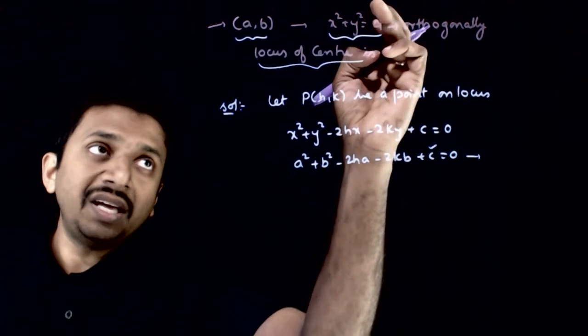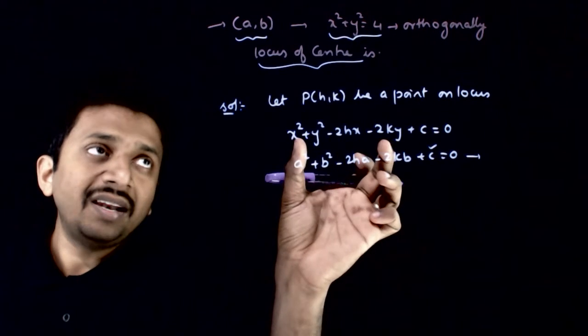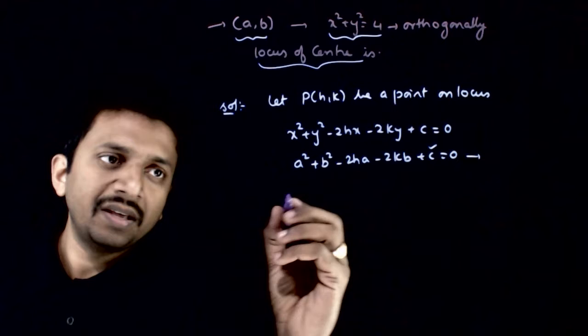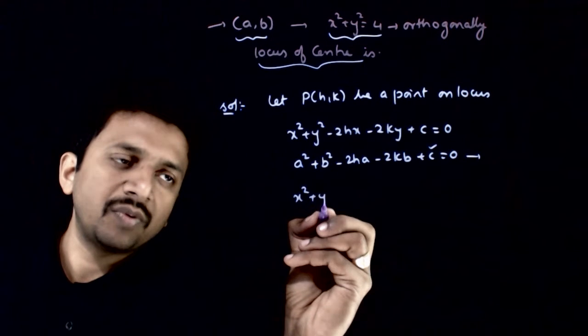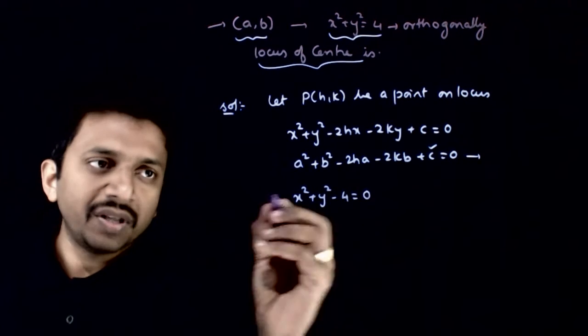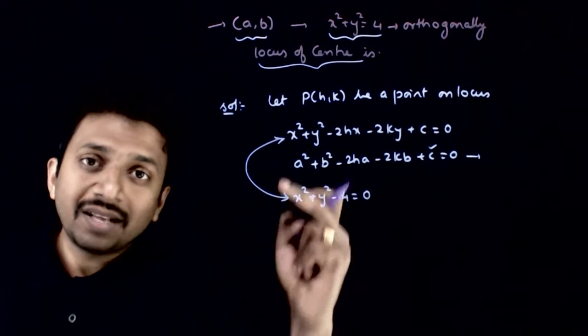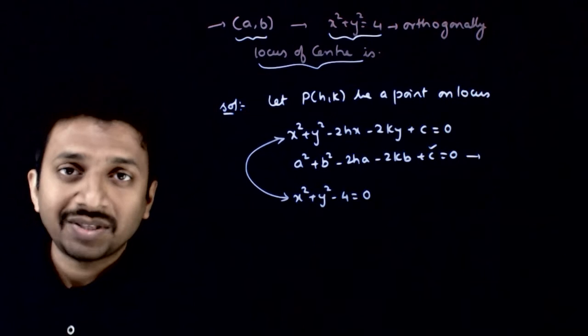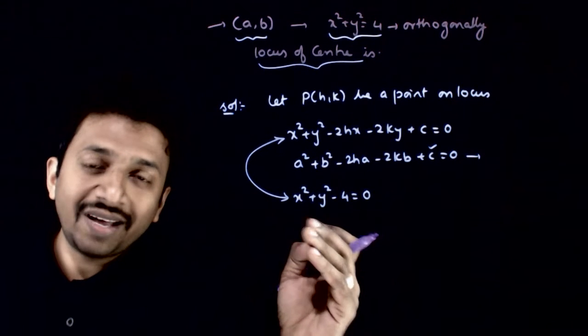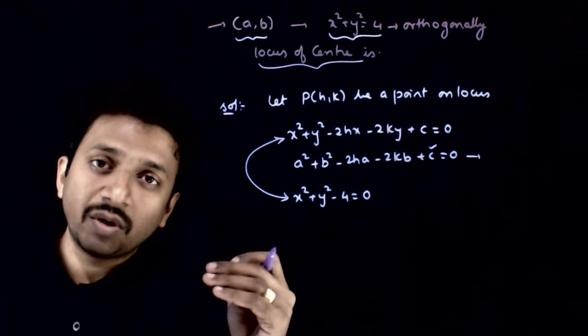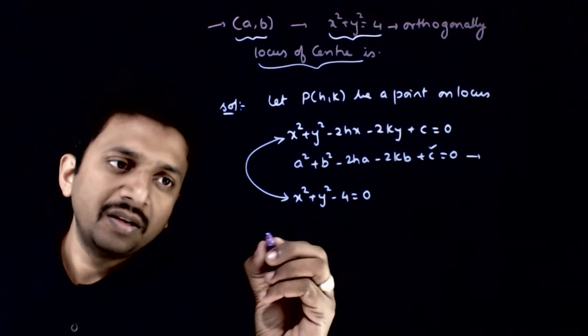The second condition is that this circle is orthogonal to the given circle. So x² + y² - 4 = 0 is orthogonal to this circle. If two circles are orthogonal to each other, what is the condition? 2gg' + 2ff' = c + c'. So this implies